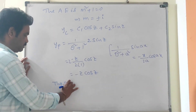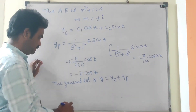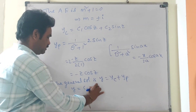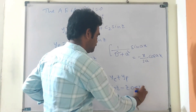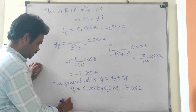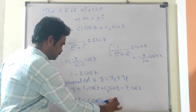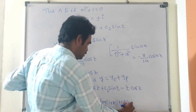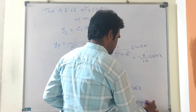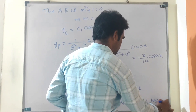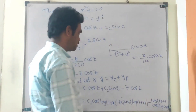The general solution is y = y_c + y_p. That is, y = c₁ cos z + c₂ sin z - z cos z. Now writing z in terms of x: y = c₁ cos(log(1 + x)) + c₂ sin(log(1 + x)) - log(1 + x) · cos(log(1 + x)). This is the required solution.